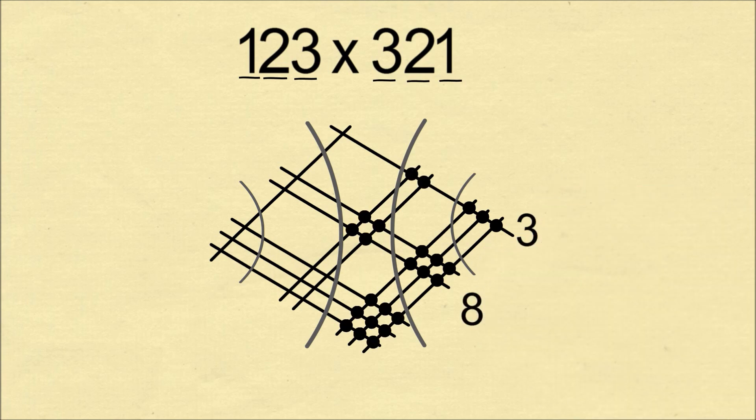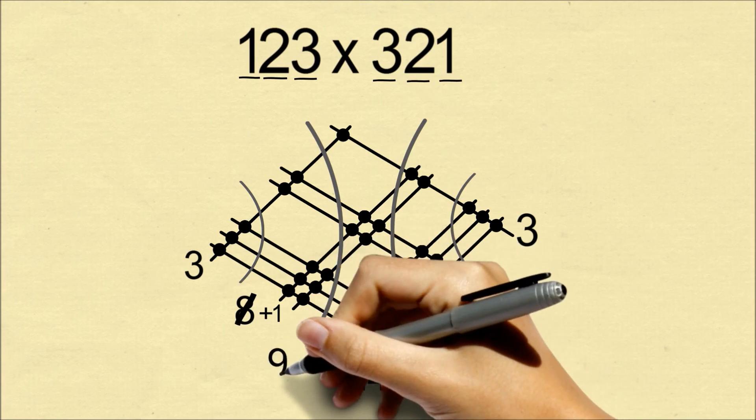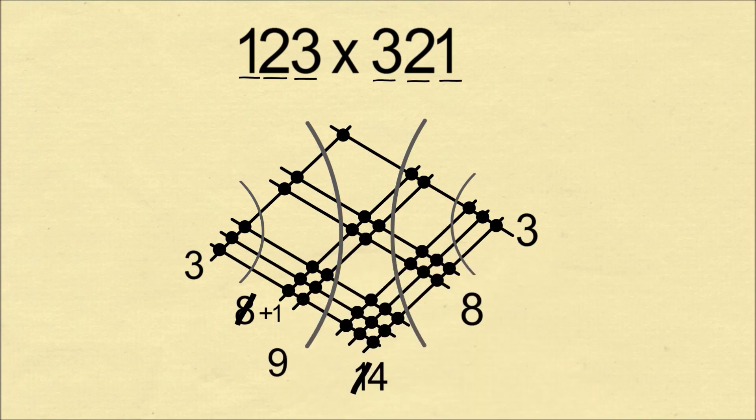The center group has a lot of intersections. We want to count them carefully. They're 14. Before we get to the answer, we have to make one adjustment. We need to carry the 1 of the 14 over to the 8, and 8 plus 1 makes 9. Now we have our answer of 39,483.